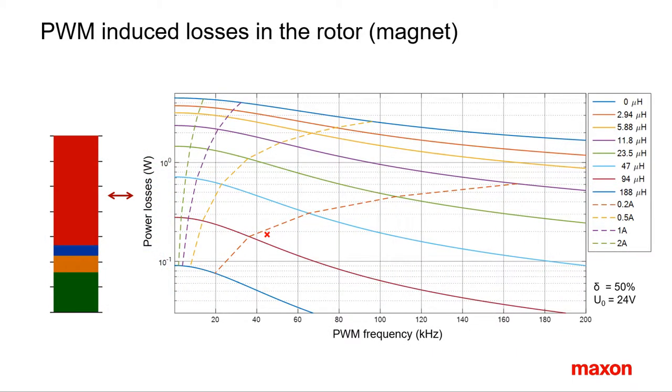Here the results of a simulation for the losses in the rotor, the magnet. It is for the red parts in the previous slide. The most important influence on these power losses stem from additional inductance. The higher the inductance, the lower the curve in the diagram, hence the smaller the losses. Observe the logarithmic scale on the vertical power axis. All curves show, the higher the PWM frequency, the more to the right in the diagram, the smaller the losses. We can conclude, higher PWM frequency and additional inductance help.